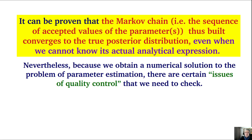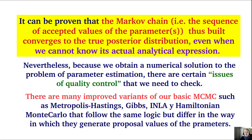There are many variants of basic MCMC algorithms, such as Metropolis-Hastings, Gibbs, INLA, Hamiltonian Monte Carlo, and many others. Most of these algorithms differ essentially in the way they generate proposal values of the parameters — different ways optimized for different types of problems and situations.